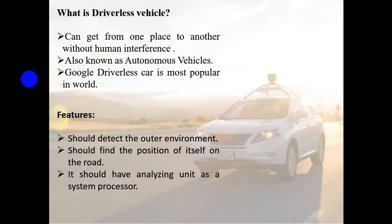Features. To move the driverless vehicle on the road without human interference, it should detect the outer environment. It should find the position of itself on the road so that it can follow the required path. And it should have an analyzing unit — a system processor like the CPU of a computer — which will analyze the input data and give the output as a mechanical force.